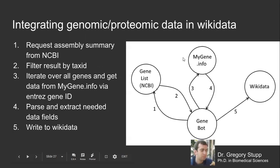The first step in creating the model organism database relies on importing the genomic and proteomic data into Wikidata. This is performed by the gene and protein bot, managed here in the lab. The general data pipeline for integrating data into Wikidata relies on two sources: NCBI and MyGene.info.